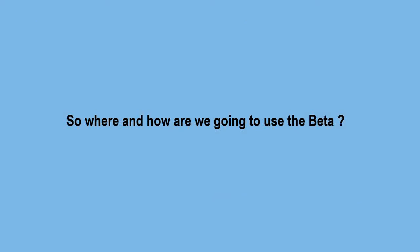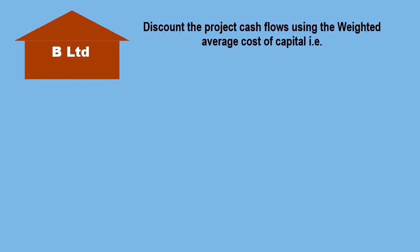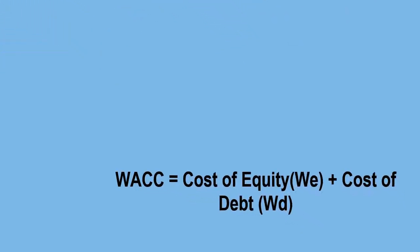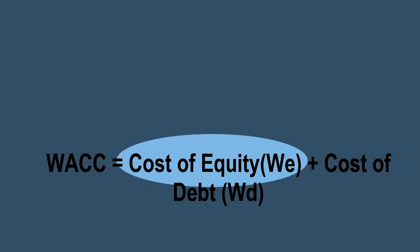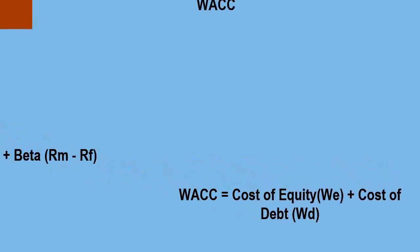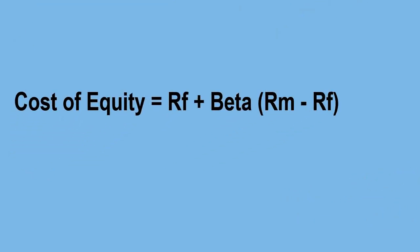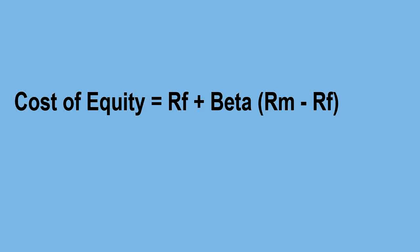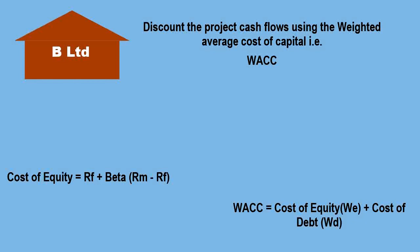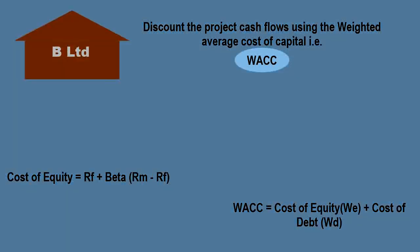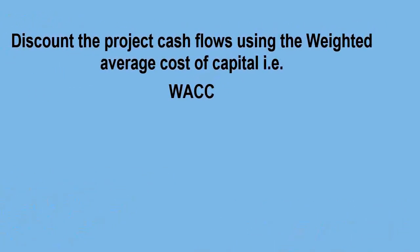Now that we have the beta for B Limited, let us recapitulate how we are going to use it. If B Limited is setting up a project, it would discount its cash flows using the WACC, which is the weighted cost of equity plus the weighted cost of debt. The cost of equity is determined by: risk-free return + beta × (market return − risk-free return). With the risk-free and market return data given and beta of 1.26, we can find the cost of equity, plug it into the WACC formula, and use that WACC to discount cash flows and evaluate the project.